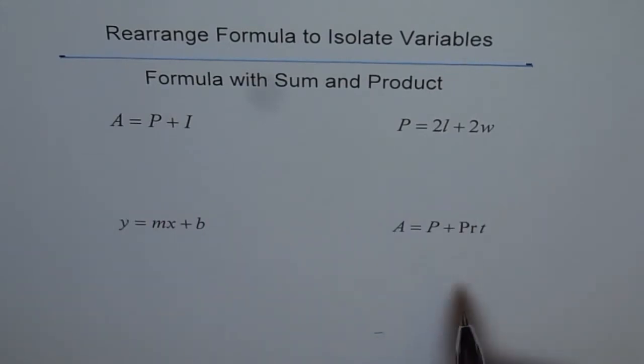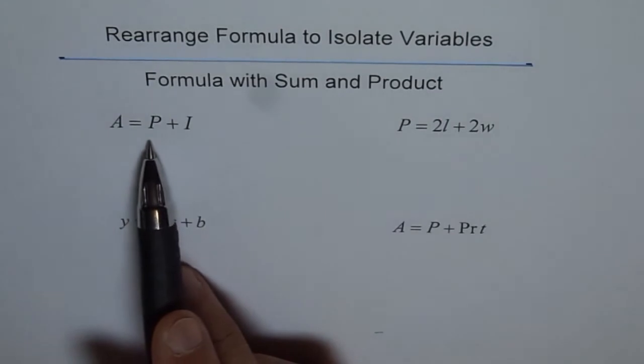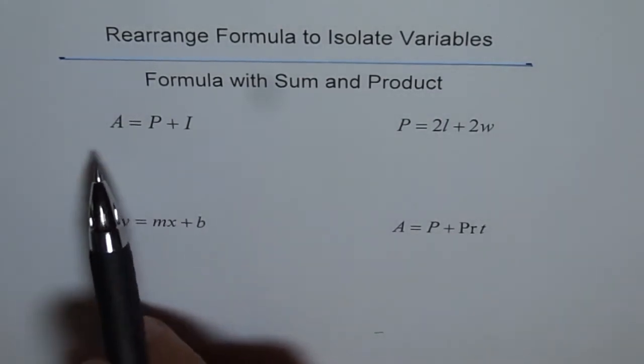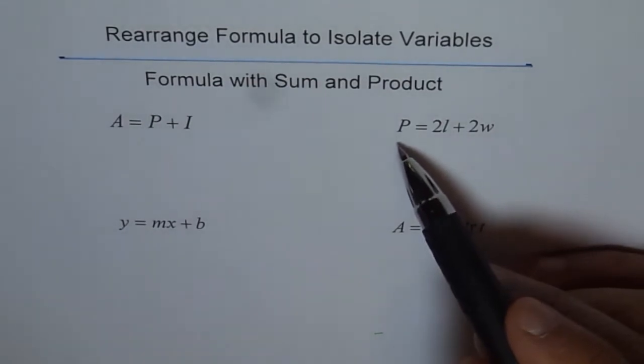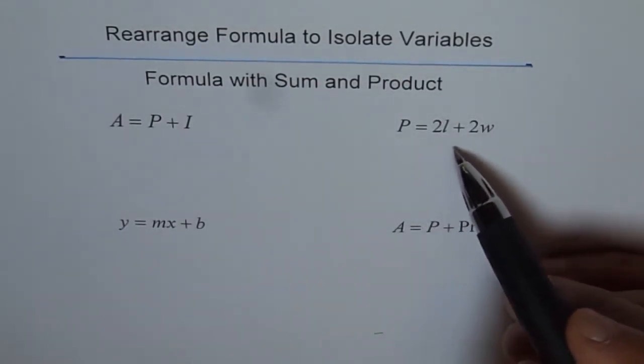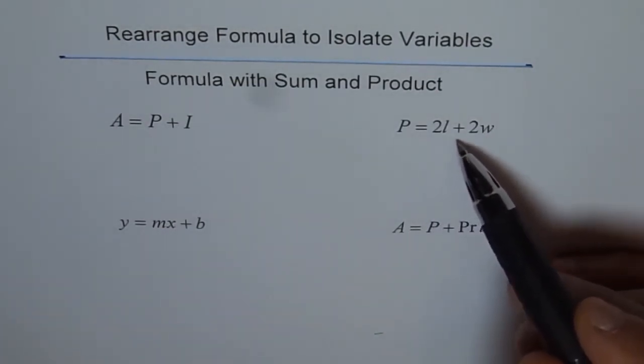Here are 4 on your sheet. A equals to P plus I. This formula is used to calculate amount if you are given principle and interest. Here, P is perimeter of a rectangle with sides length of L and width of W. So, perimeter of a rectangle is 2L plus 2W.